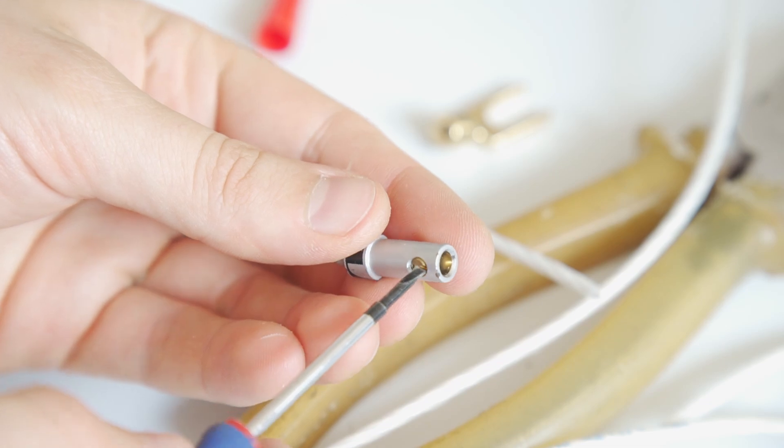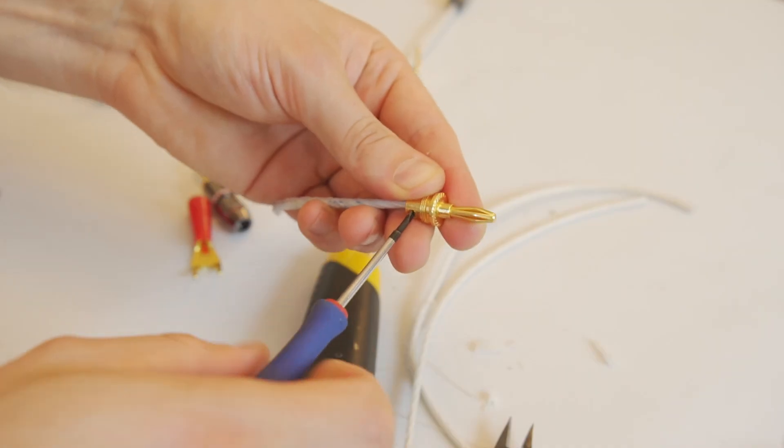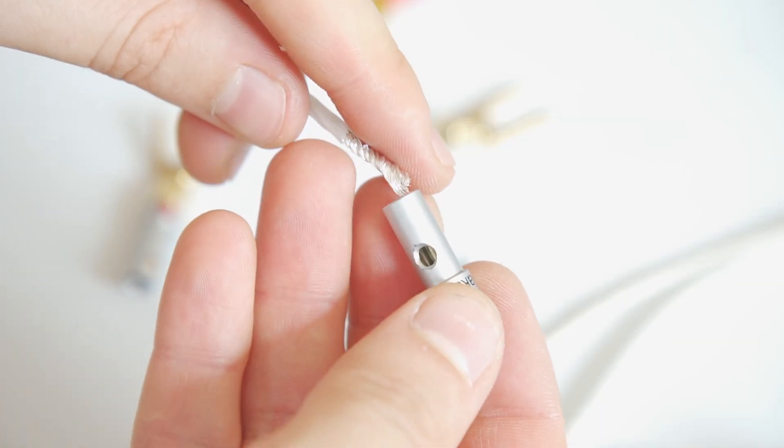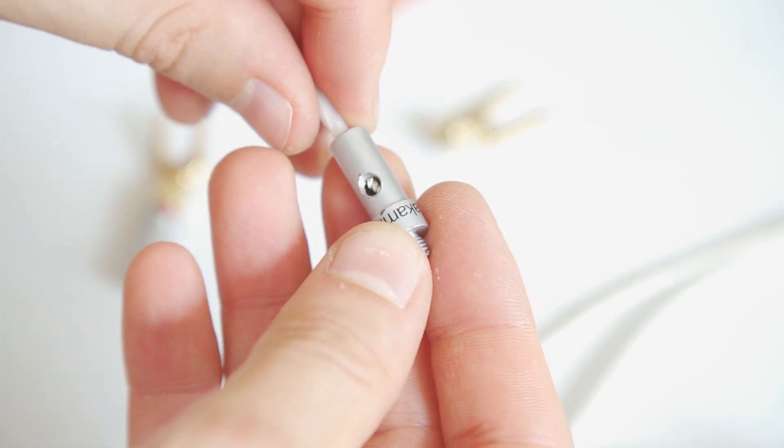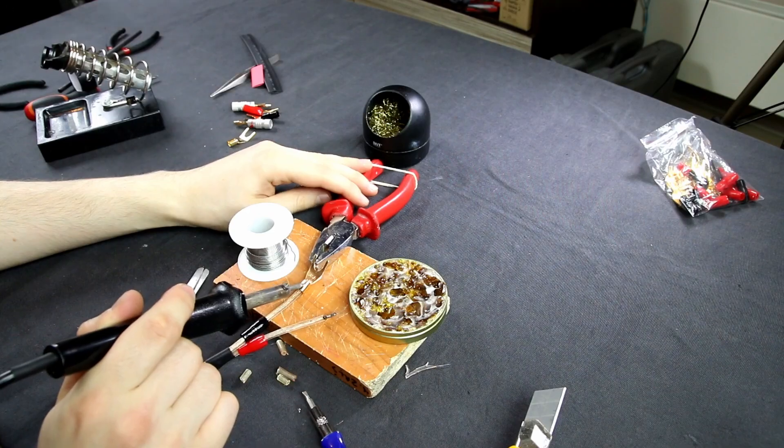To install the spade or banana plugs, there are two ways. Solder the wires to the connectors or screw them in. Since my cable is high quality and doesn't oxidize, I'll go with the screw method. It's faster. But if your wire is prone to oxidizing, it's better to solder the ends.